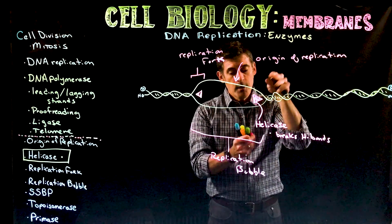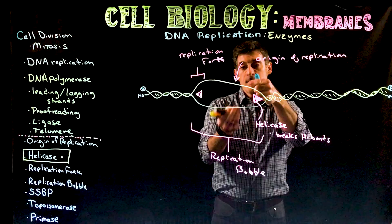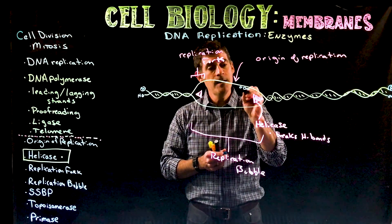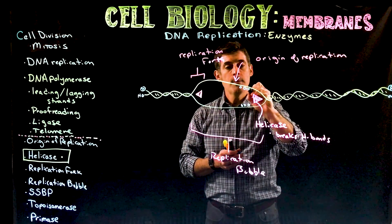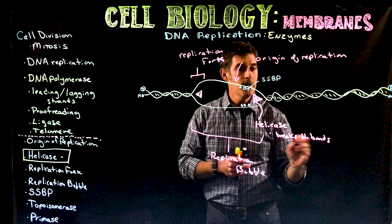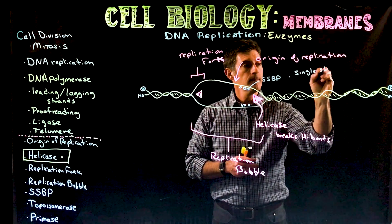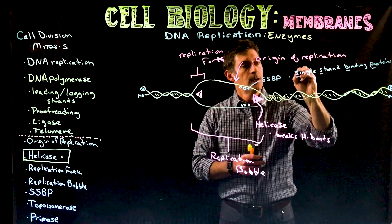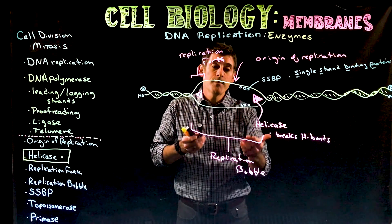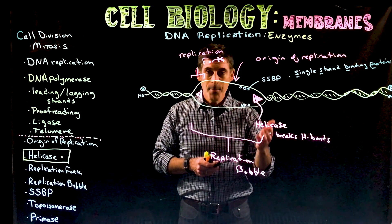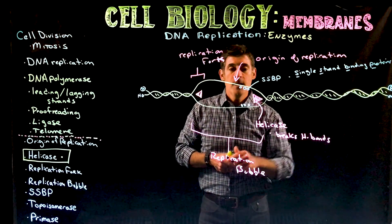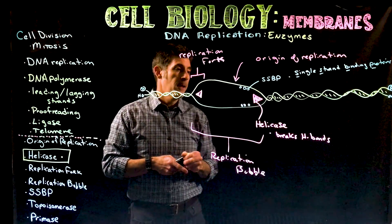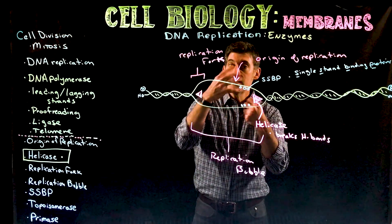Helicase is pulling the strands apart, but the strands would like to come back together — A binding with T, G binding with C. To prevent that, coming in behind the helicase are proteins called SSBPs, single strand binding proteins. They bind to single strands of DNA and keep them single so they don't hydrogen bond with the other strand. They're temporarily there until they're removed when the new DNA is put in place.